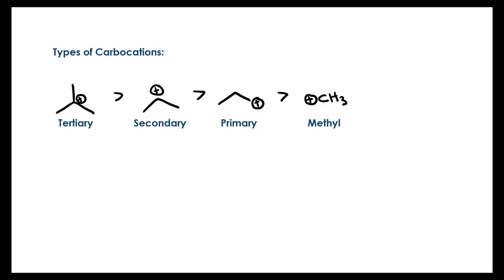Let's look at the different types of carbocations. The main types that we have are tertiary, secondary, primary, and methyl carbocations. If we look at the tertiary carbocation first, you'll see that it's attached to three different carbon atoms.